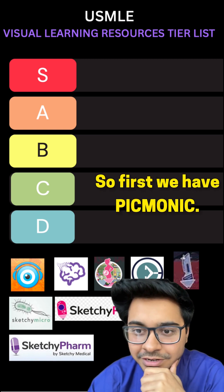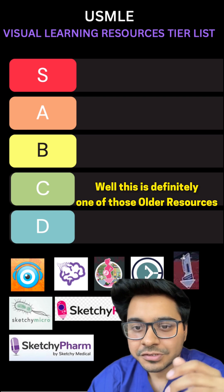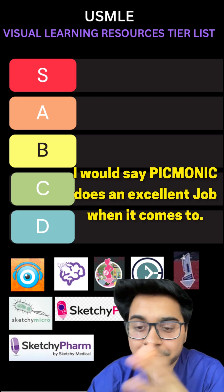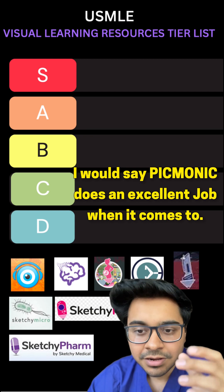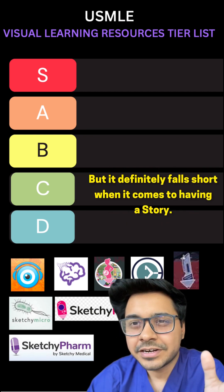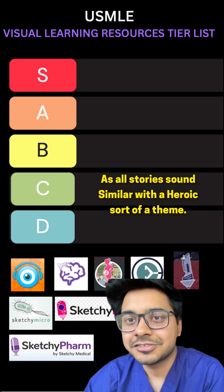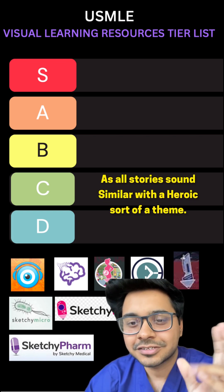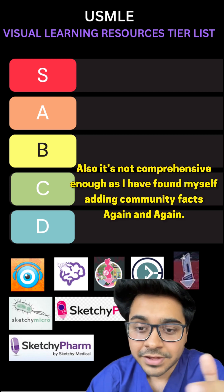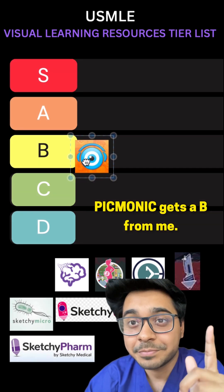First we have Picmonic. This is definitely one of those older resources and I've used it quite a bit. Picmonic does an excellent job when it comes to symbolic representation in the artwork, but it falls short on having a story, as all the stories sound similar with a heroic sort of theme. Also, it's not really comprehensive enough, as I found myself adding community facts again and again. Picmonic gets a B from me.